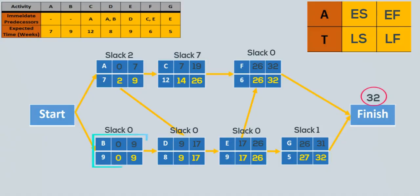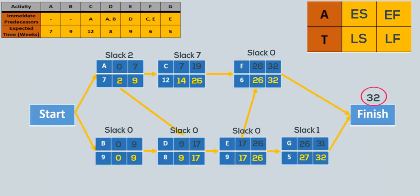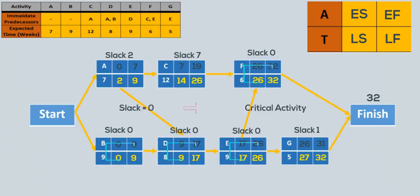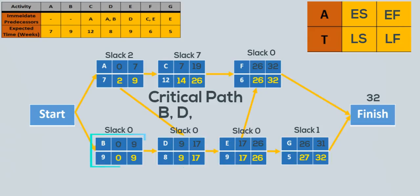Activities B, D, E, and F, on the other hand, cannot be delayed at all without extending the project's completion time. So for example, if D is delayed by 2 weeks, then the project completion time will be extended by 2 weeks as well, from 32 to 34 weeks. The activities with zero slack are called the critical activities and they form the critical path, which is the longest path in the network. So the critical path here is B, D, E, and F respectively.